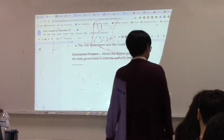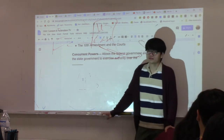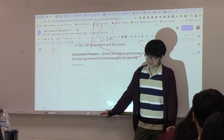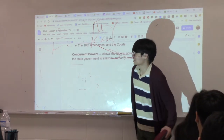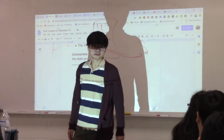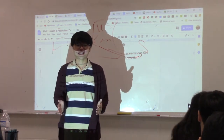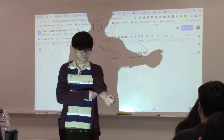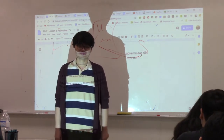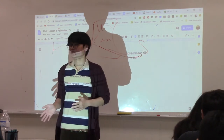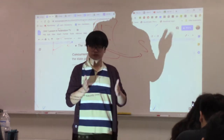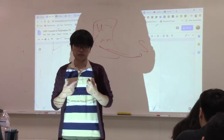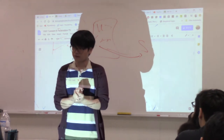There's a third type of power: concurrent powers. Think of concurrent enrollment — you're in high school but also getting college credit at the same time. Concurrent powers are powers that belong to both the federal government and the state governments. There are certain policy areas that both governments are able to control. For example, what authority belongs to both?